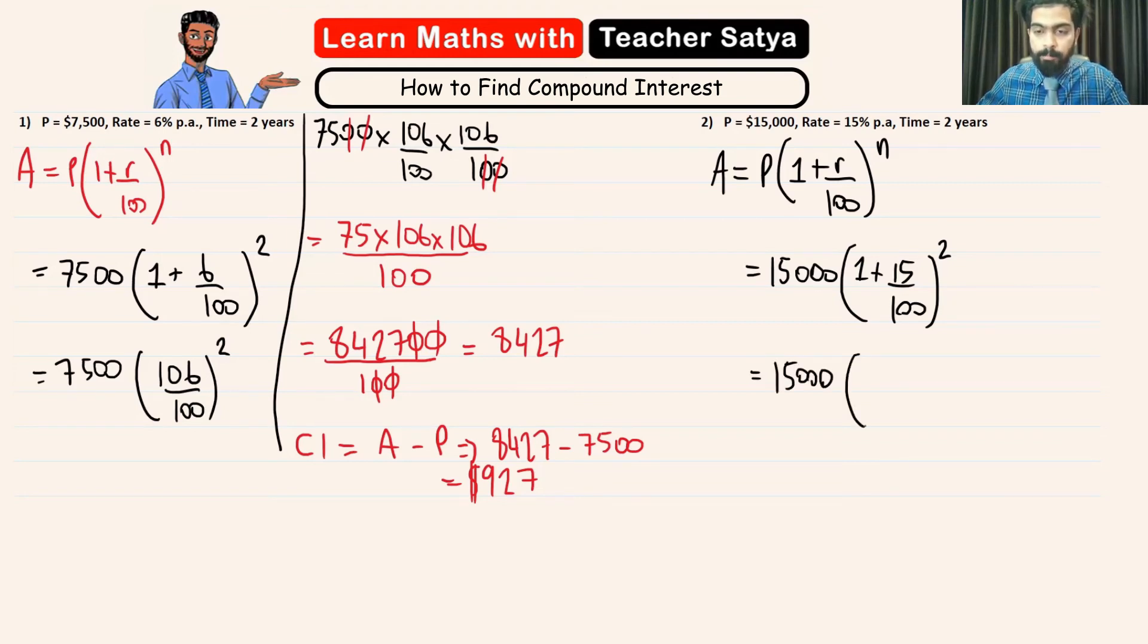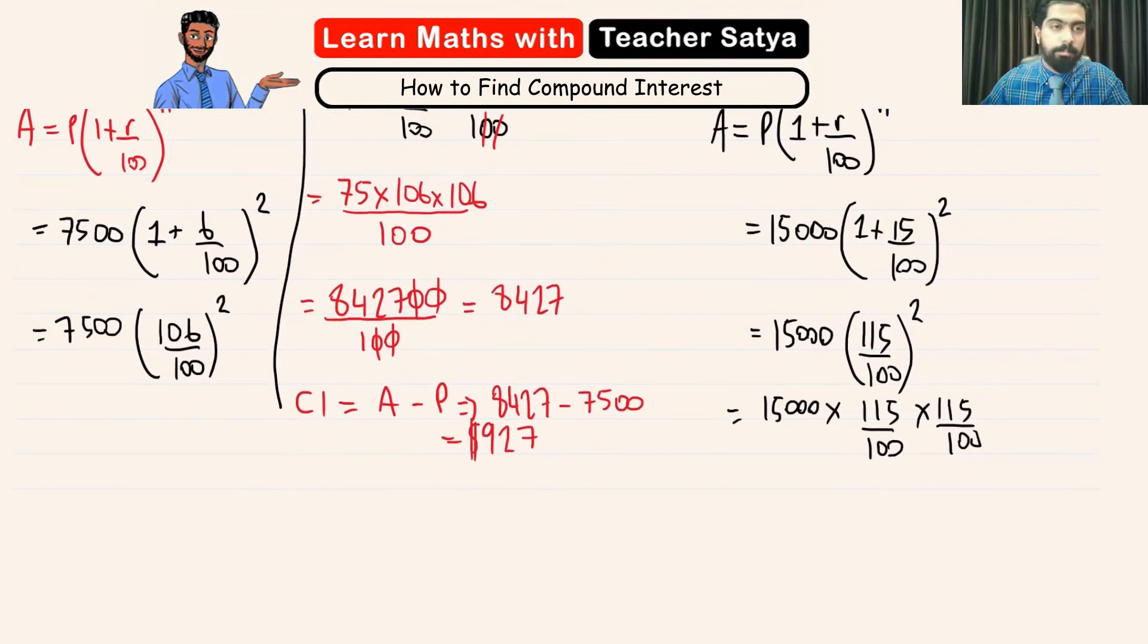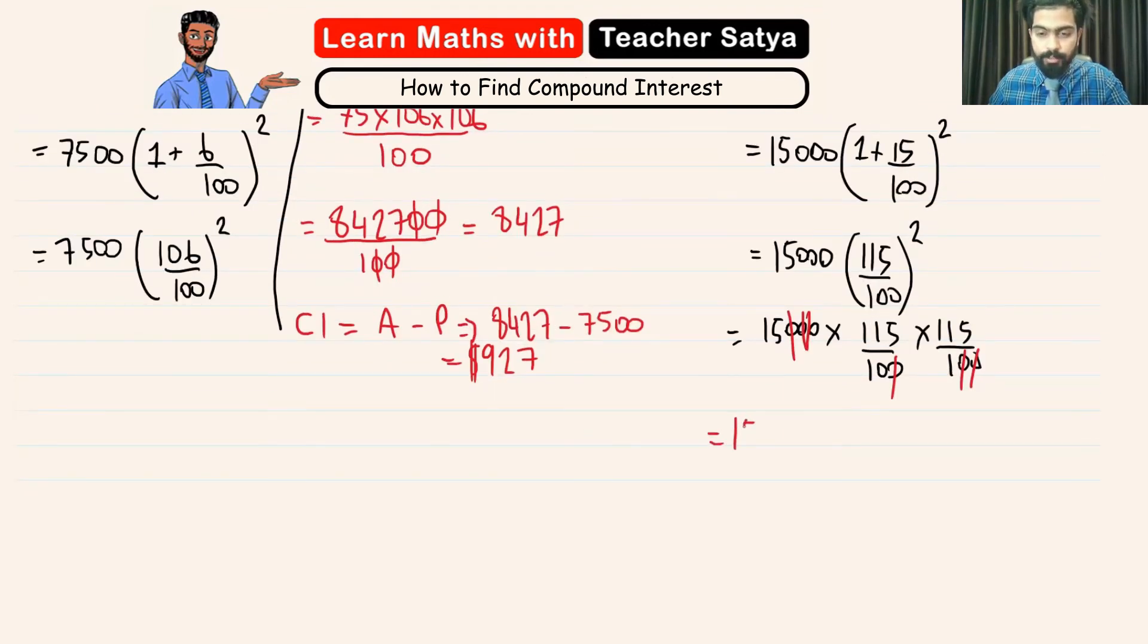We are going to solve inside the bracket first. So, 15,000 multiplied by 115 over 100 to the power of 2. Now, let's go ahead and simplify a few zeros. So, these two zeros and these two zeros can simplify. This zero and this zero can simplify.